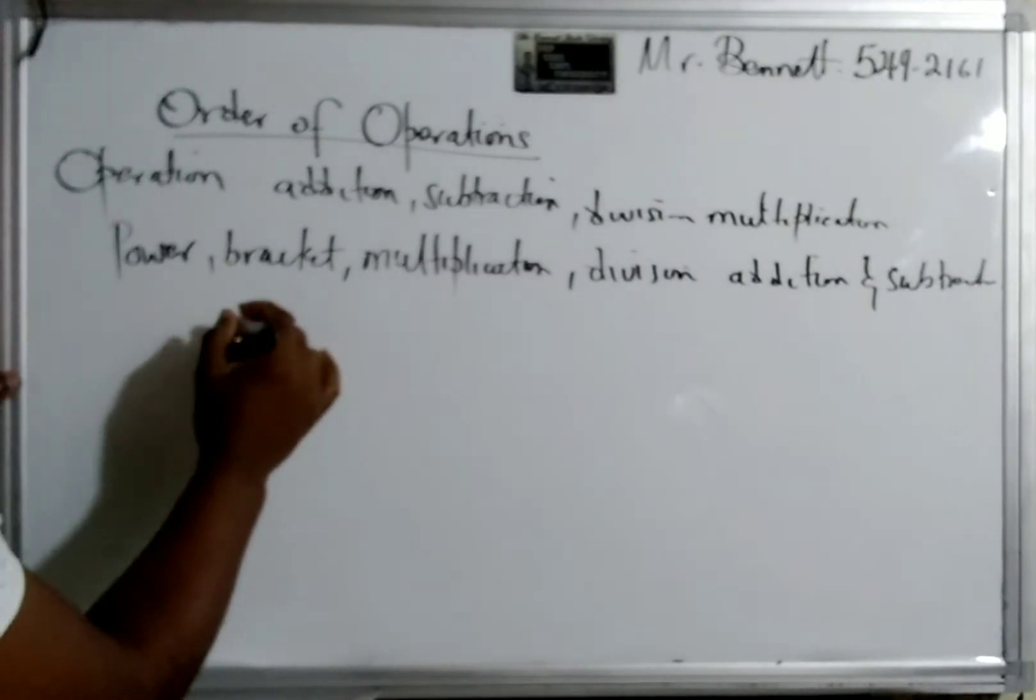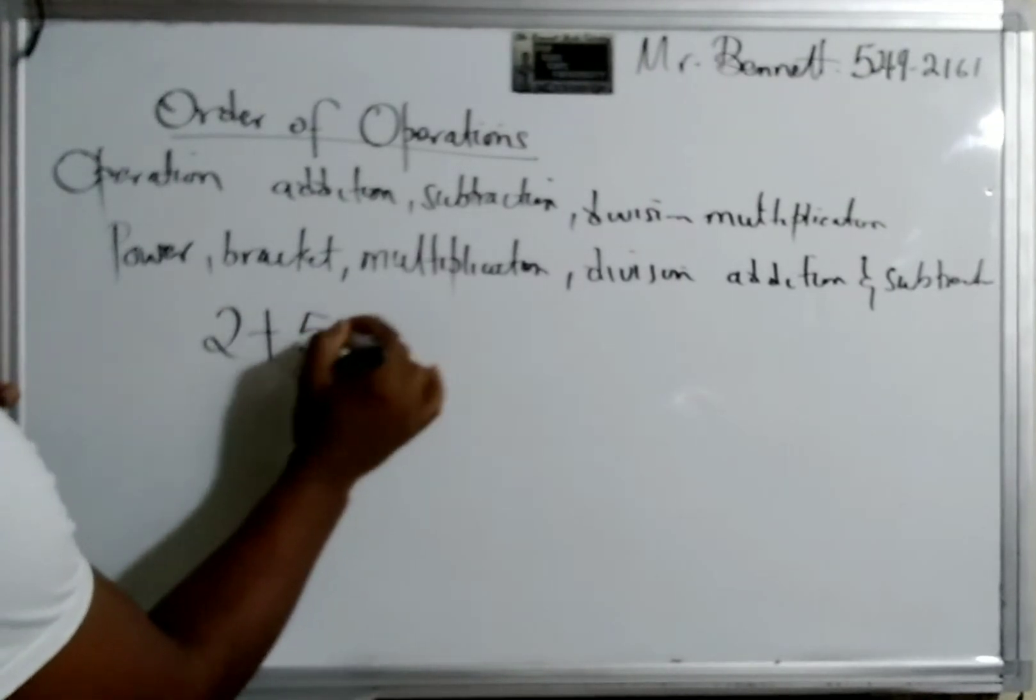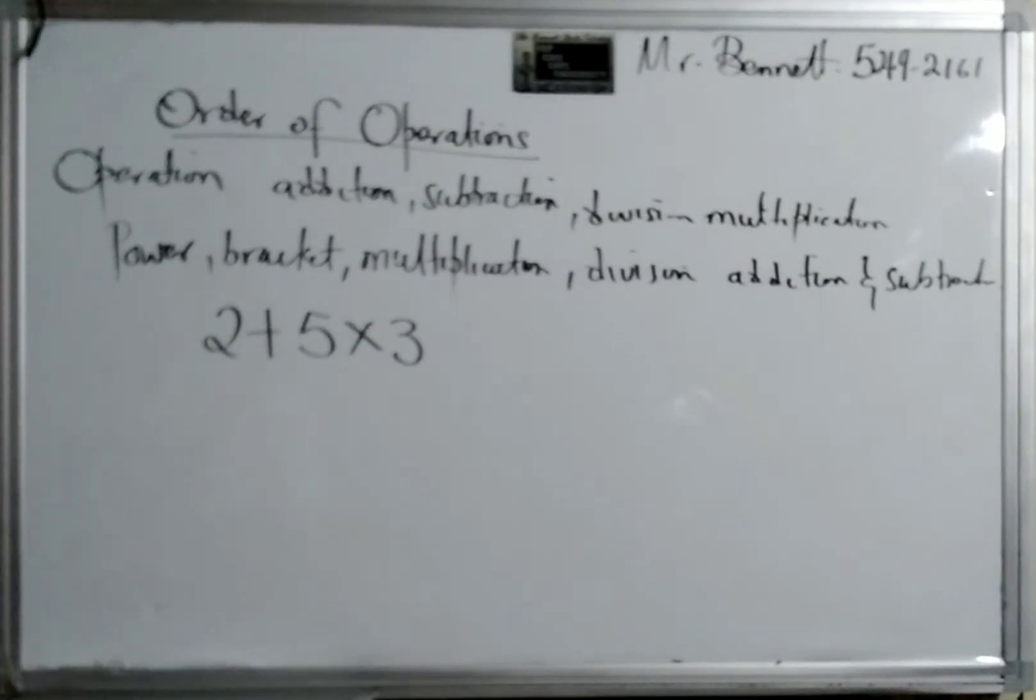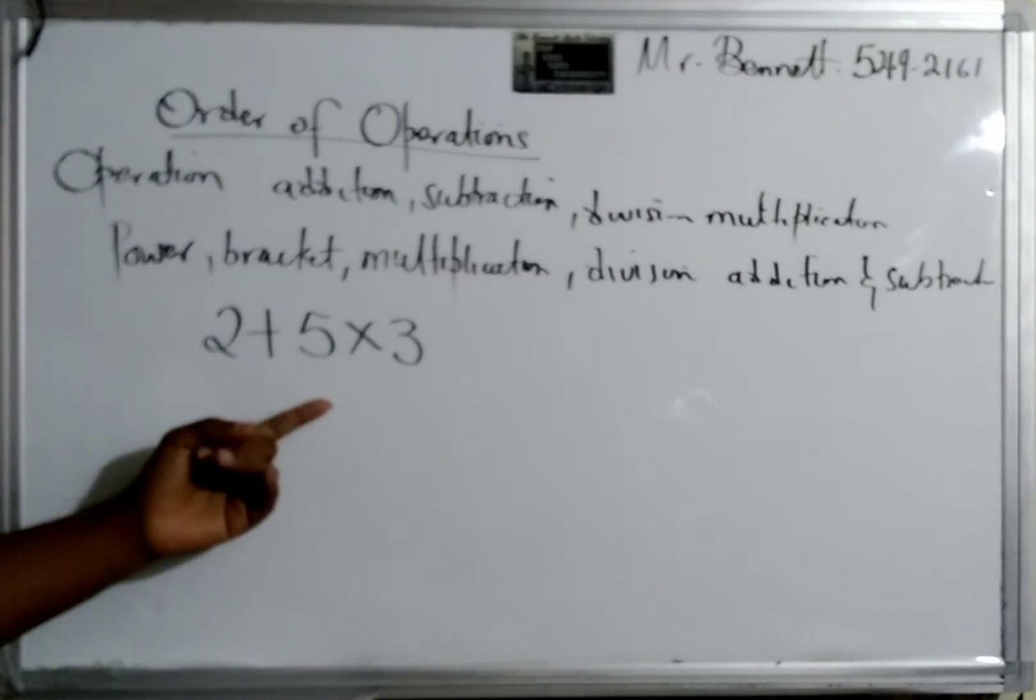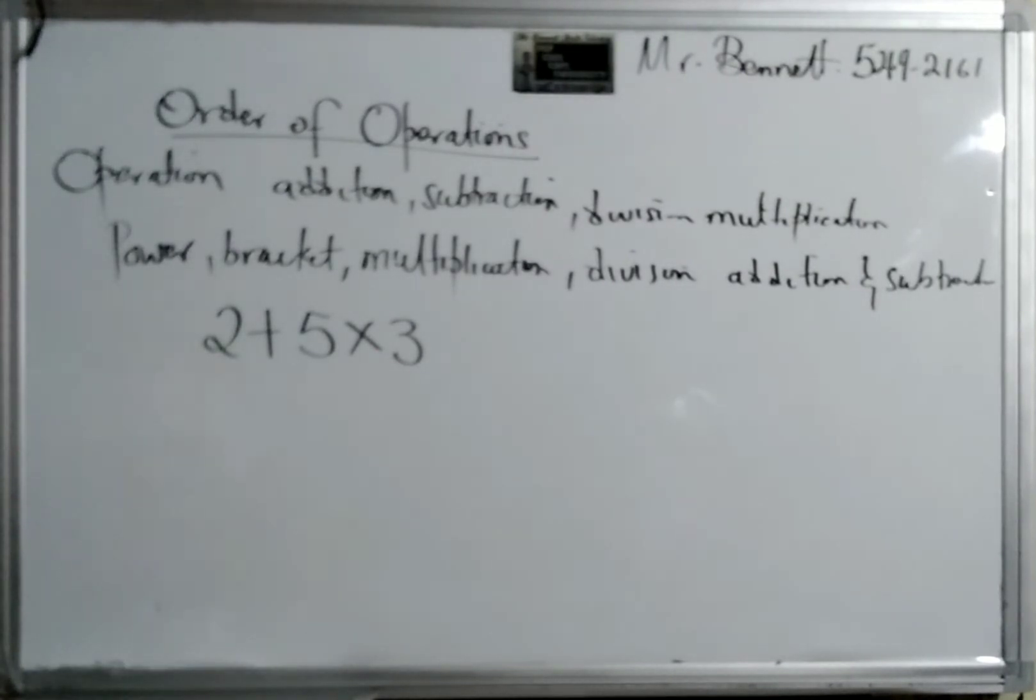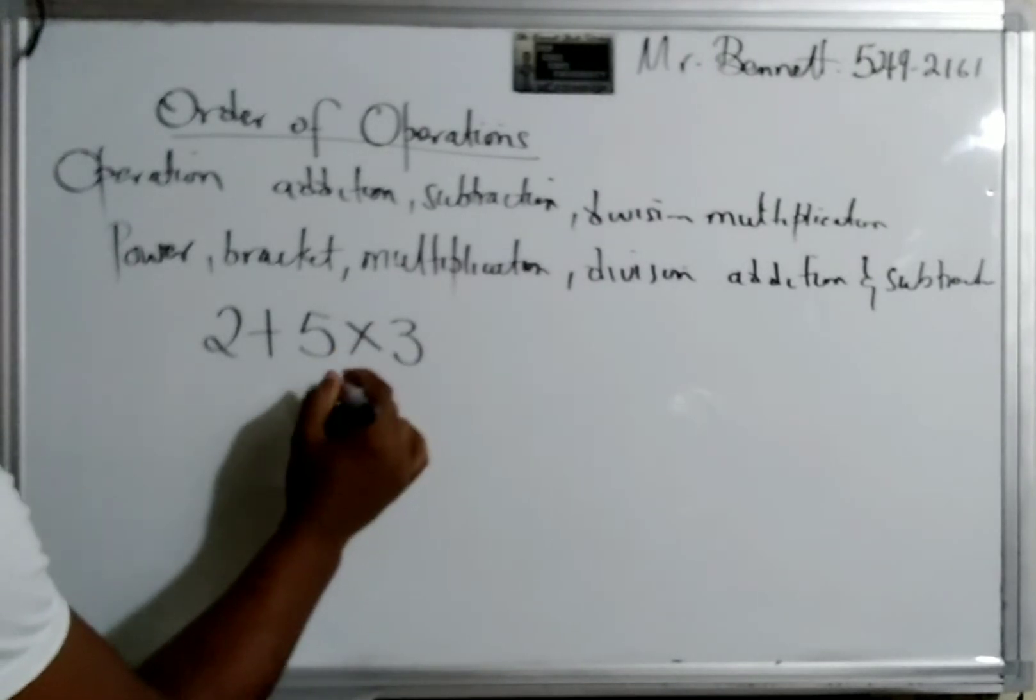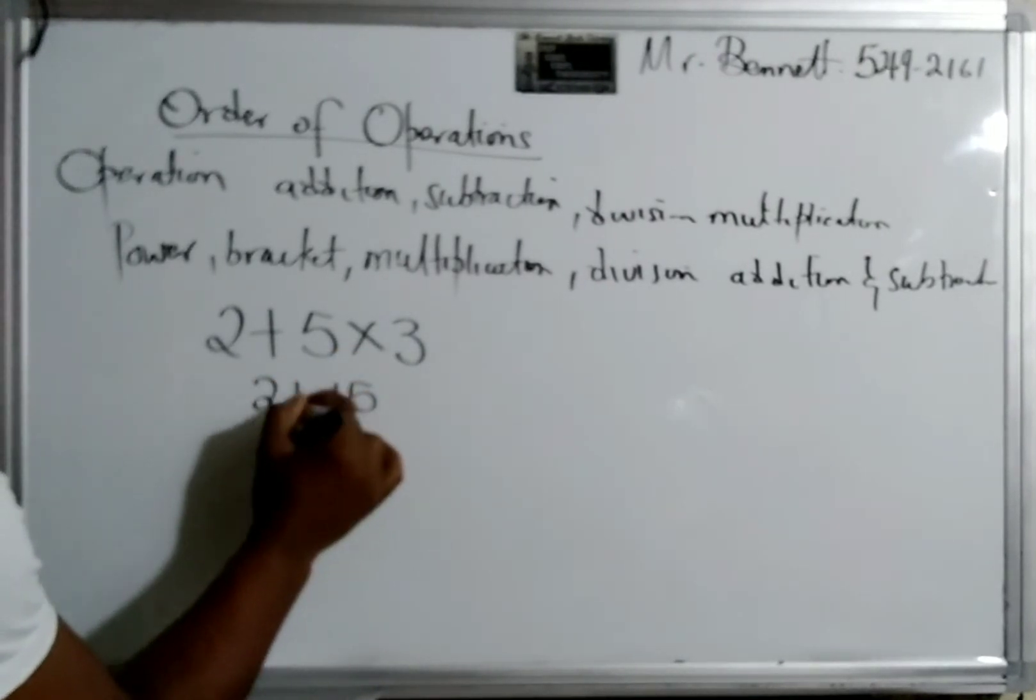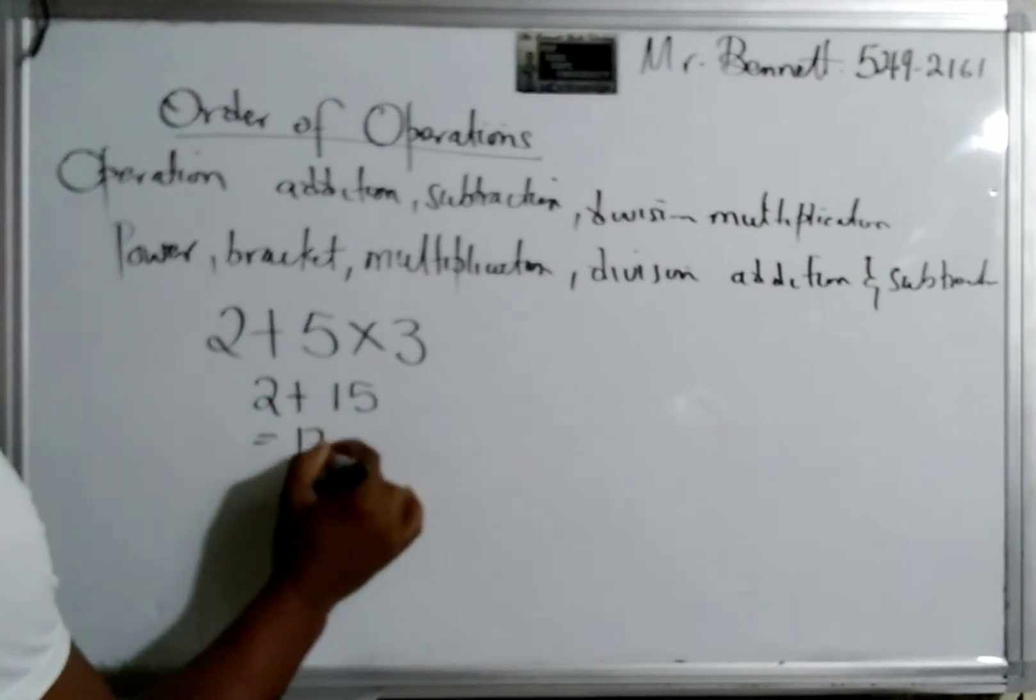And a lot of students get these wrong, you know, trust me. So we have 2+5×3. Now students are sometimes tempted to say two plus five is seven, and seven times three is 21. However, following order of operations we must multiply first. So even though we have two plus, we multiply. So it's 5×3 = 15, plus 2, so the answer is 17.